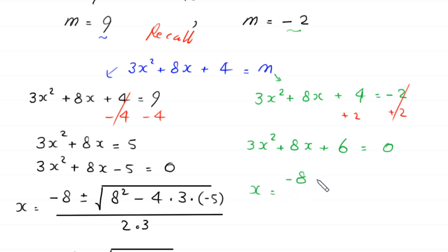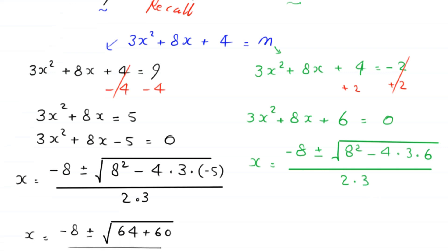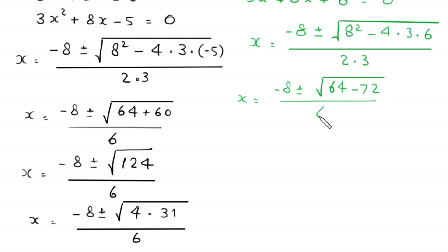This quadratic equation is not factorable, so we solve it by the quadratic formula. x equals negative 8 plus or minus square root of 8 squared minus 4 times 3 times 6, divided by 2 times 3. That gives negative 8 plus or minus square root of 64 minus 72, divided by 6, which is negative 8 plus or minus square root of negative 8, divided by 6.